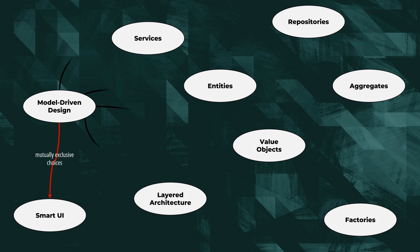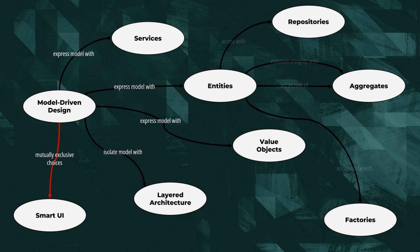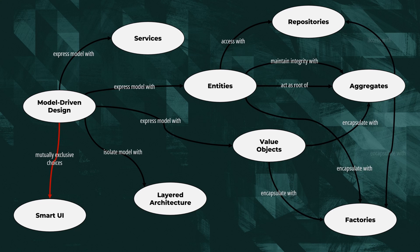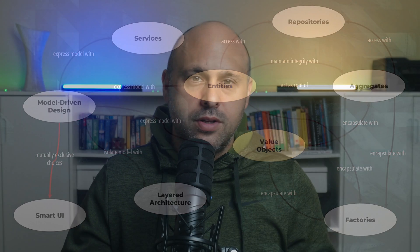The first elements we leverage in tactical domain-driven design are entities and value objects. These are the core building blocks of DDD that allow us to define our domain, and most importantly, identify all relationships between objects known as associations.